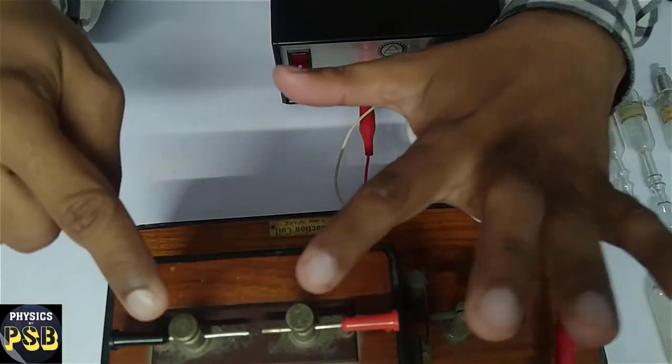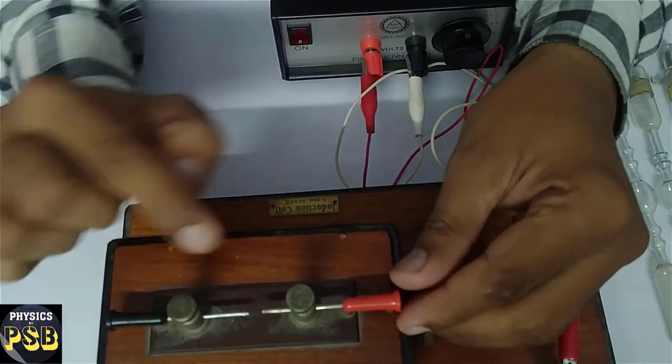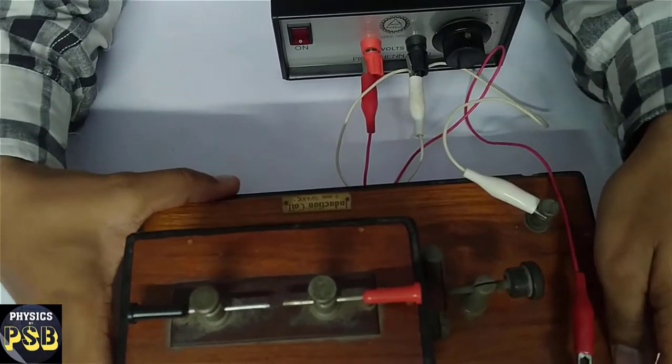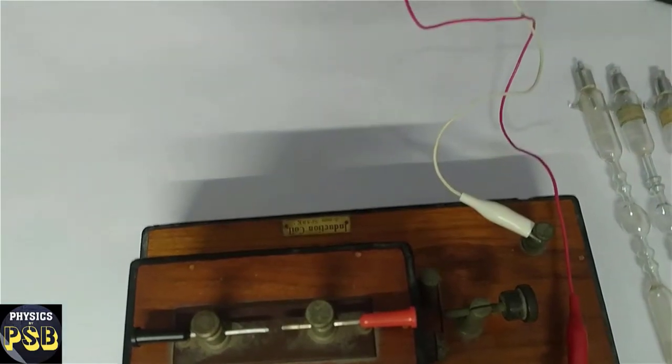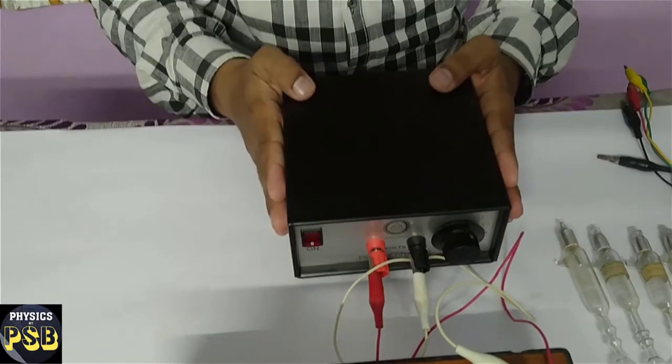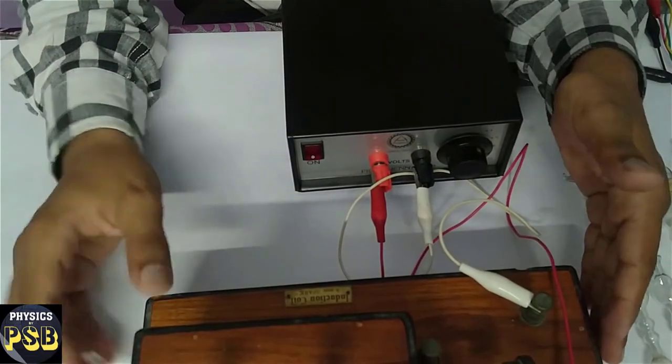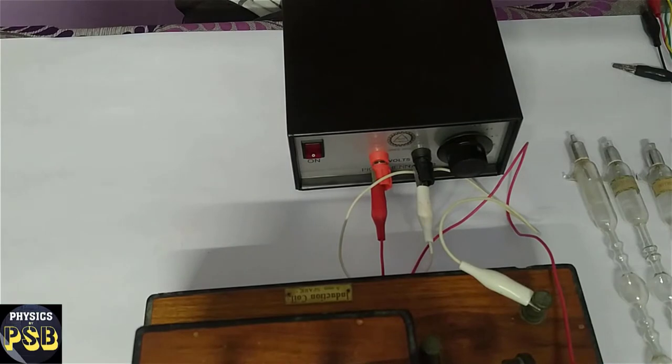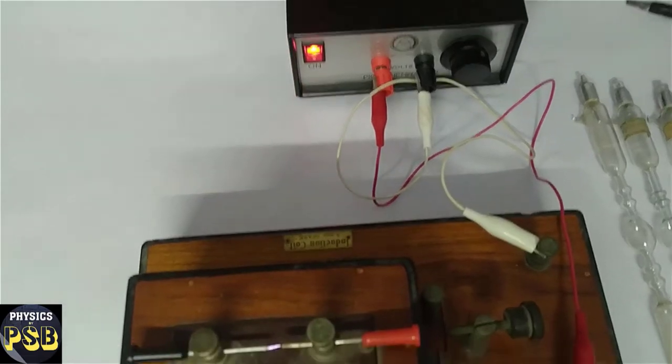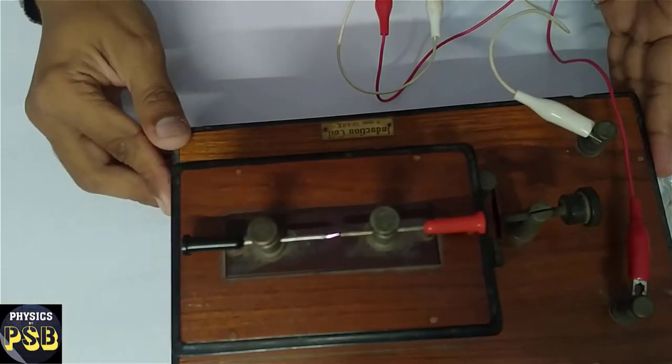This is the secondary of the induction coil to which I have fixed two sharp nails. I am going to pass around 6 volts current through this induction coil. I switch on the power supply. Here you can observe the spark between the nails.